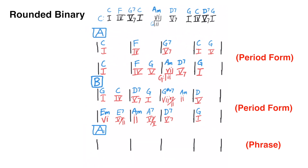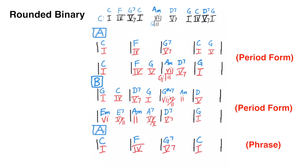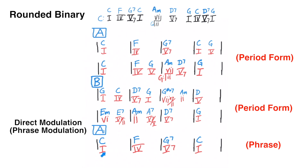Keep in mind we're composing a rounded binary form. Binary form is A followed by B. Very often the A section and the B section will be repeated, so we would have A, A, B, B. For rounded binary, we just add a little bit of the A section at the end — here we're just using one phrase. I'm going to go ahead and just take these first four chords so that I end with an authentic cadence in the key of C, the five-seven to one. I did not do another common chord modulation here — instead I did a direct modulation, also known as a phrase modulation. I ended the B section on the one chord and then went directly back to the key of C and established that key. Let's go ahead and hear this progression.